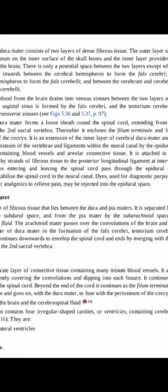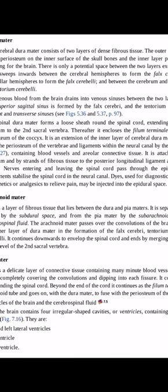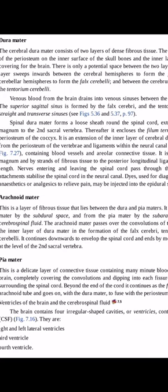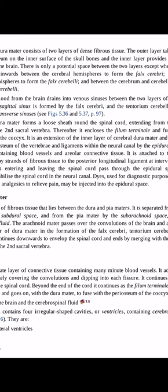There is very little space between these two dura mater layers, except at the places where the inner layer of the dura mater indents between the two cerebral hemispheres and forms the falx cerebri. When it indents between the cerebral hemispheres and cerebellar hemispheres, it forms the tentorium cerebelli, and when it indents between the two cerebellar hemispheres, it forms the falx cerebelli. Venous blood from the brain drains into the venous sinuses present at these places where the inner layer of the dura mater indents to form the falx cerebri, tentorium cerebelli, and falx cerebelli.